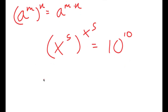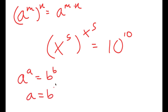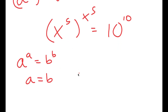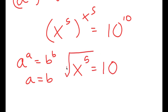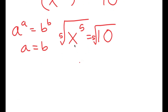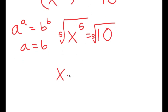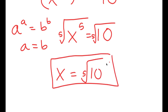My final property of exponents I'm going to use is that if I have something in the form a to the power of a is equal to b to the power of b, this means that a is equal to b. So in this case x to the power of 5 is equal to 10. To solve this we take the fifth root on both sides: the fifth root of x to the power of 5 is x, so x is equal to the fifth root of 10. This is my solution.